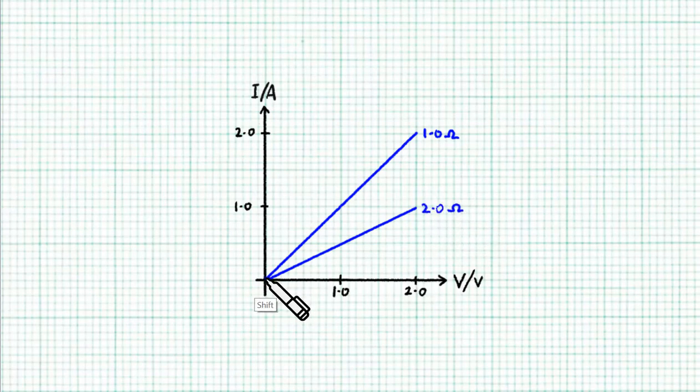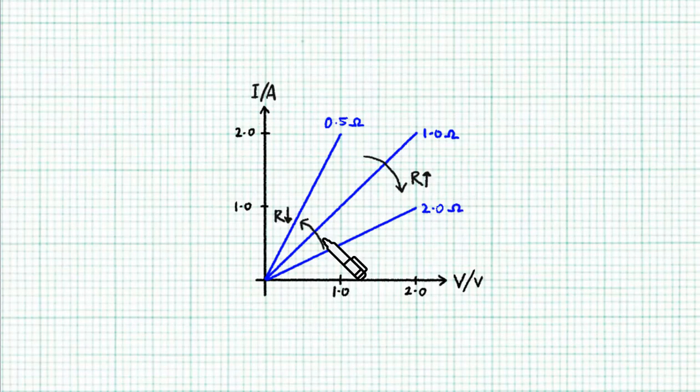And this one is actually 1 volt divided by 2 amps, 0.5 ohms. Do you realize that as the line leans more towards the voltage axis, the resistance actually goes up? Conversely, if the line leans more towards the current axis, then the resistance goes down.